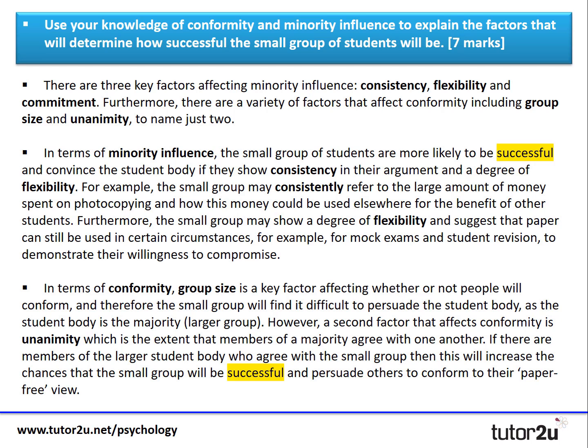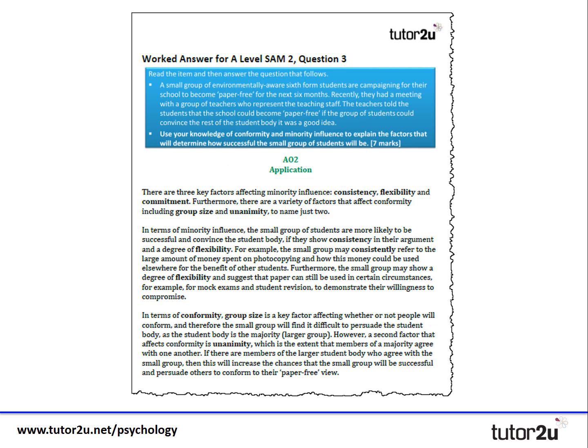Notice how the word 'success' has crept into both paragraphs — that's to make sure I'm signposting my application back to the question. The question asks you to explain the factors that will determine how successful the small group will be, so keep referring to that. That would be enough to get you the seven marks and into that top mark band. It doesn't need to be a hugely lengthy answer, but it does need to be thought out and applied back to the question, because this is a seven mark applied question.